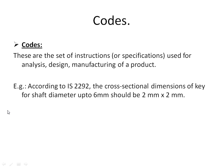Next, codes. Codes are a set of instructions or specifications used for analysis, design, and manufacturing of a product. For example, if you use two cars — one made by Tata Motors and another made by Honda — you feel a considerable difference between the performance of these two cars, because of the specifications or instructions given by each company for manufacturing or designing those particular cars.